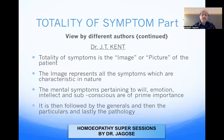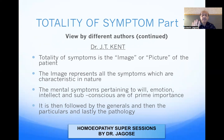Dr. Kent says the totality of symptoms is the image or picture of the patient. The image represents all the symptoms which are characteristic in nature. The mental symptoms pertaining to will, emotion, intellect, and subconscious are of prime importance. Kent tells us that the characteristic symptoms represent the image or picture of the patient, which in turn represents the totality. It is followed by the generals, then the particulars, and lastly the pathology — forming the image of the totality of symptoms according to Dr. Kent.